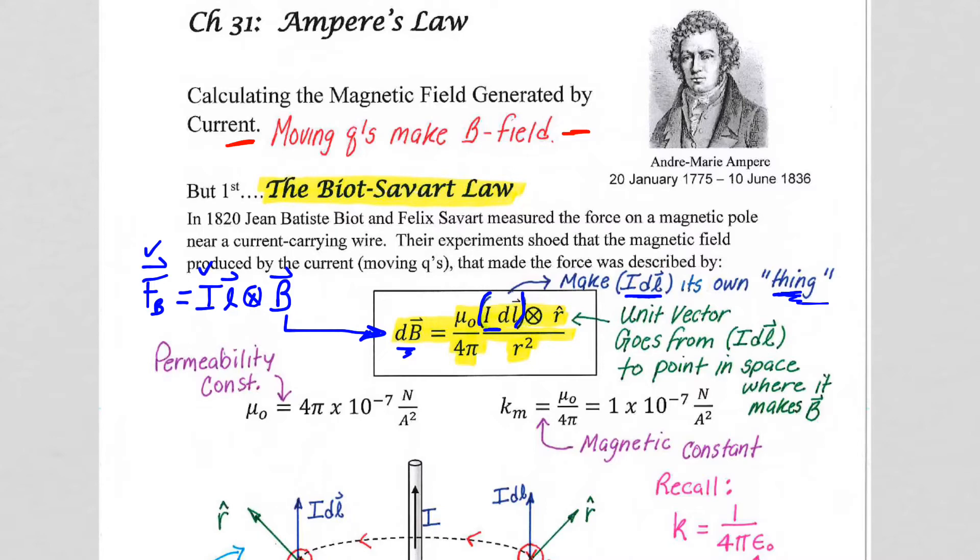And we'll see an example in a second. The R hat is the unit vector, and again, please get this into your notes, the unit vector that goes from IDL to the point in space, where again, we're saying that IDL produces or makes a B field.